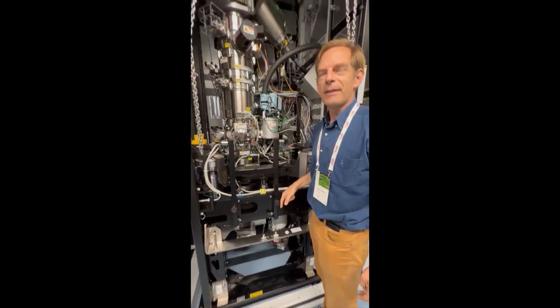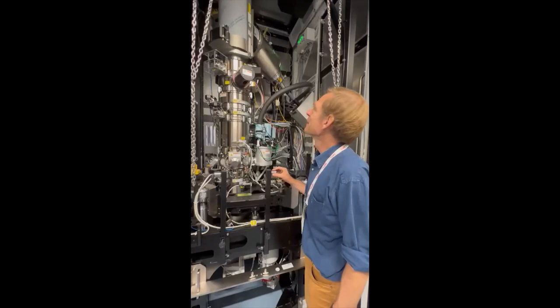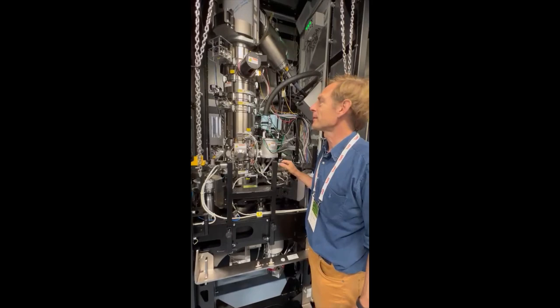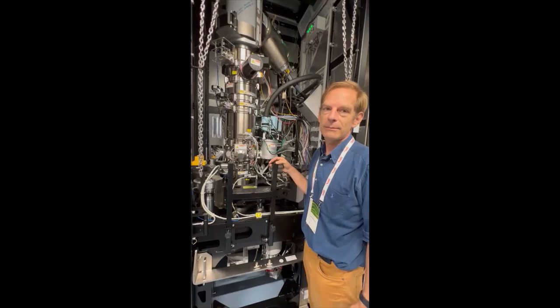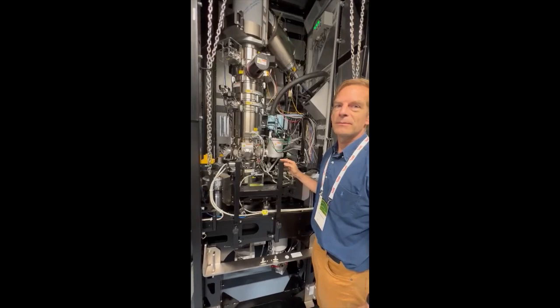This camera is a high-speed camera. The camera alone is more expensive than a house. The whole microscope is millions. We got a special deal. How many of these are there in the world of this type? Maybe 300. 200 to 300.